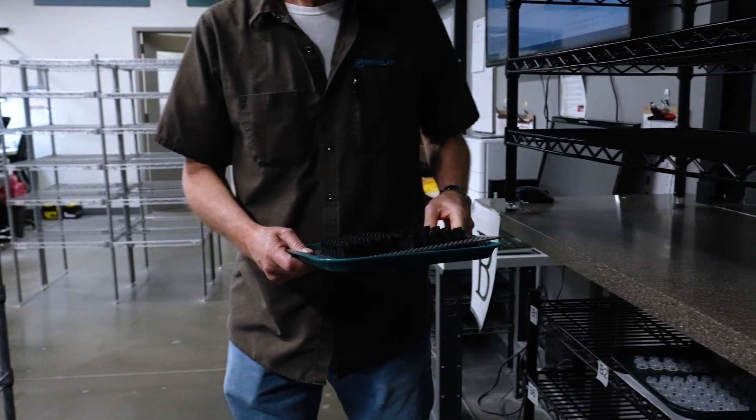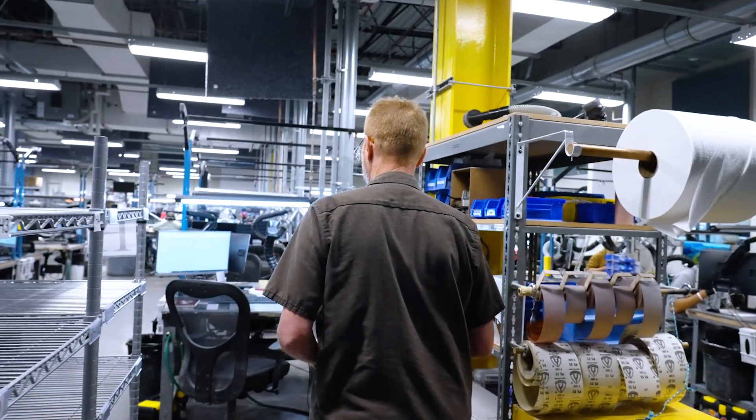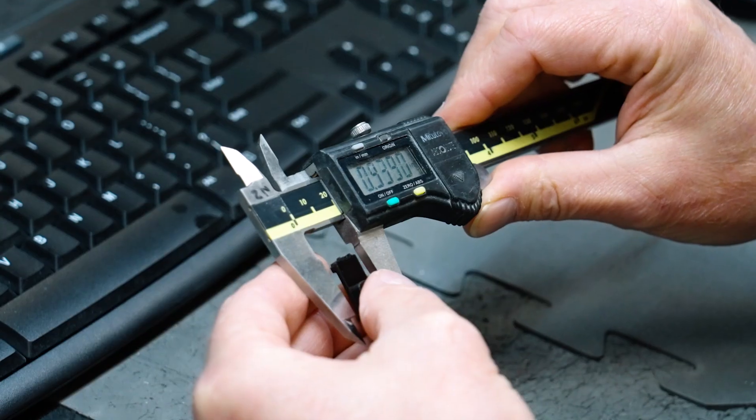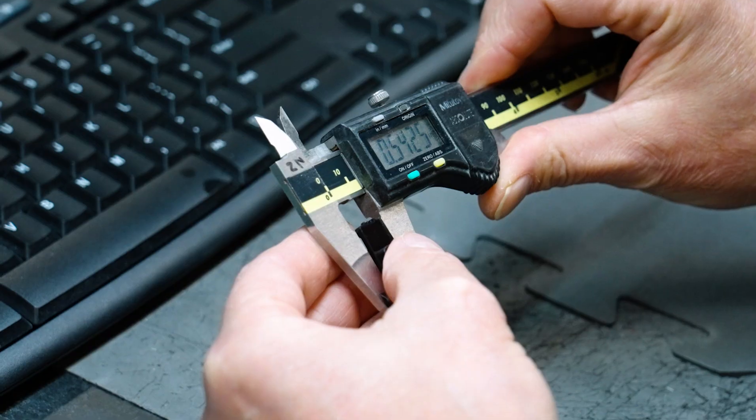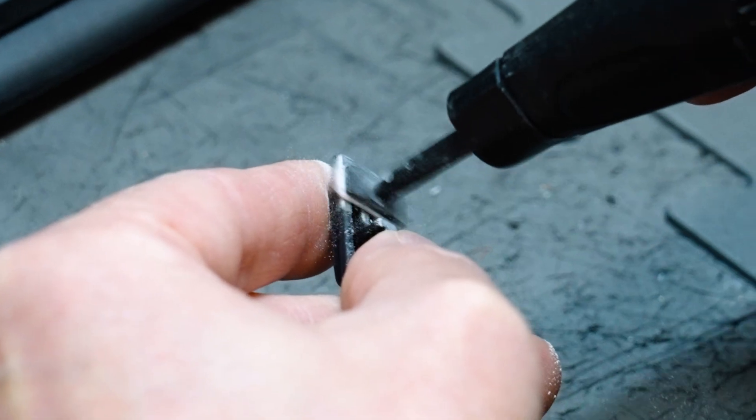There are a number of ways to improve cosmetics of SLA parts after the build is complete. At our SLA post-processing stations, we remove support structures, sand, and grit blast parts for consistent surface finishes.